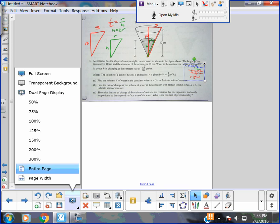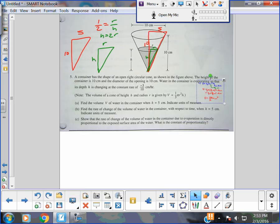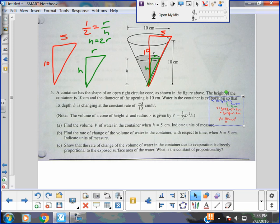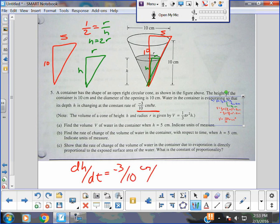Letter B, this is the related rate. Find the rate of change of the volume of water in the container with respect to time when H is 5. Indicate units of measure. We said from the get-go that when we were given this, that was dH/dt. So taking the AP, we're always going to want to write our notes. And we're going to find dV/dt when what? When H was 5 centimeters.